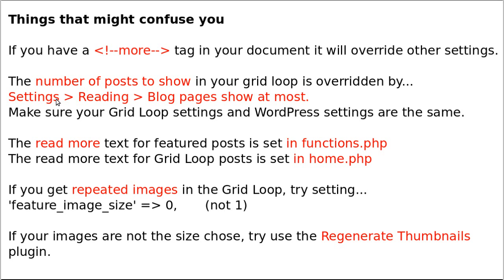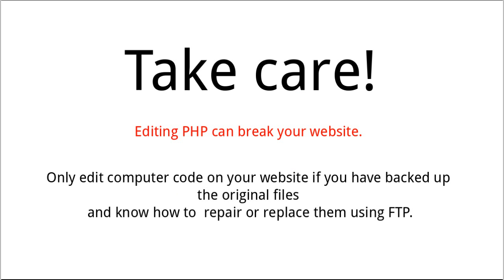Set the number of posts to show in both your WordPress settings and in the grid loop settings. If you get repeated images, set your featured image size to zero. Don't forget to use Regenerate Thumbnails if you make any new thumbnail sizes. Be careful — only do this when you've learned how to use FTP and you can back up and replace any files or folders you might break. Thanks for watching!